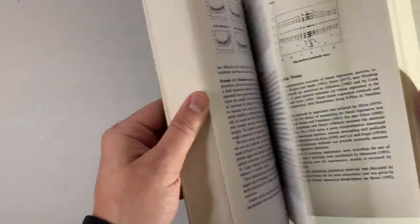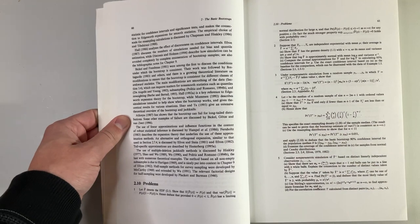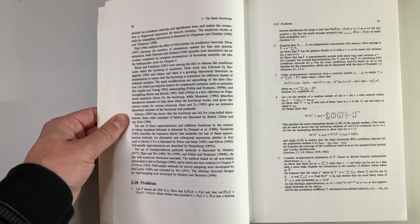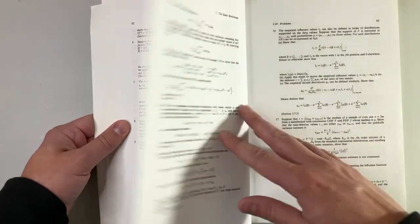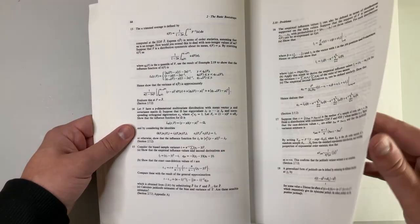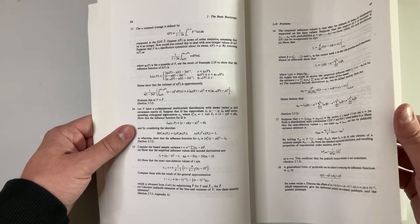Readers are tested on comprehension at the end of each section with two types of problems. The first type are analytical problems and the second type are practicals. The practicals give readers a chance to get hands-on experience with the bootstrap.